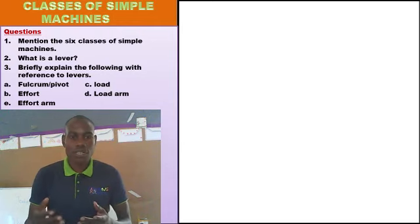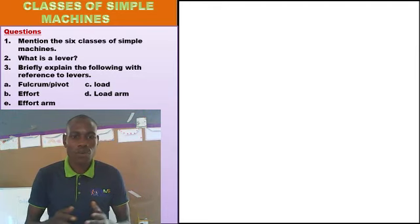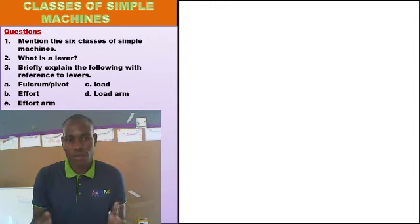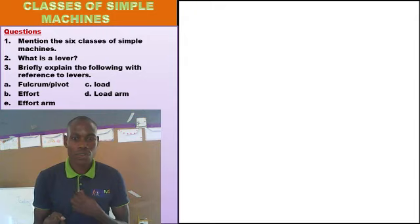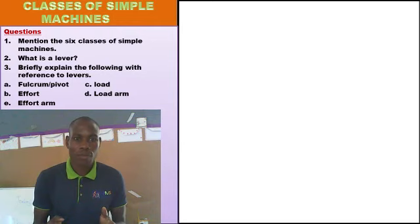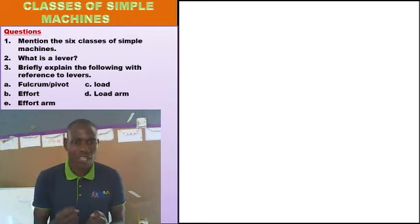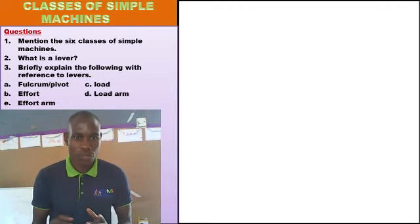Machines also speed up the rate of doing work. You can do heavy work within a short period of time using a machine. For example, if you walk from your home to the training center it would take some time, but if you use a machine — for example, a bicycle — it would take you a very short period of time to reach. That is what we looked at.